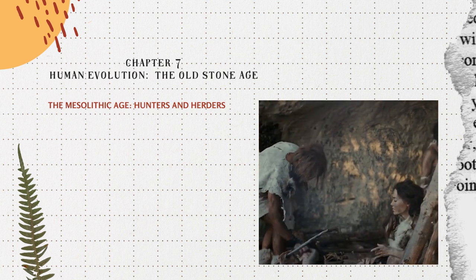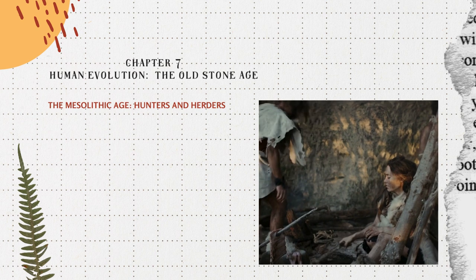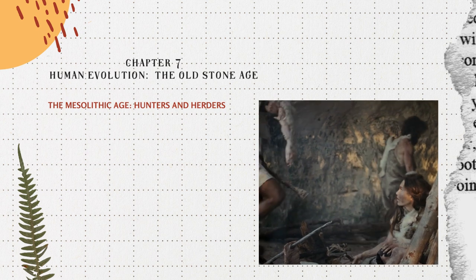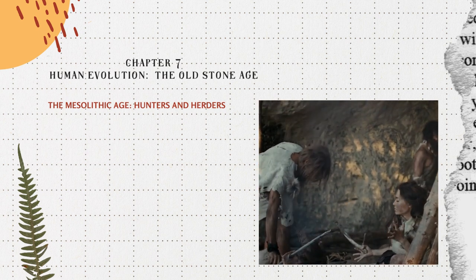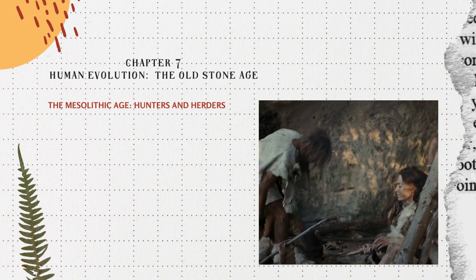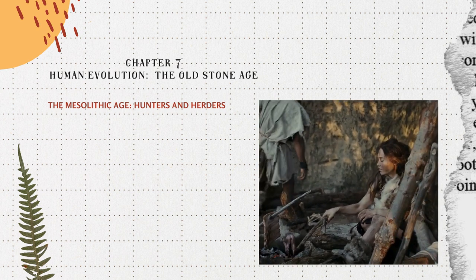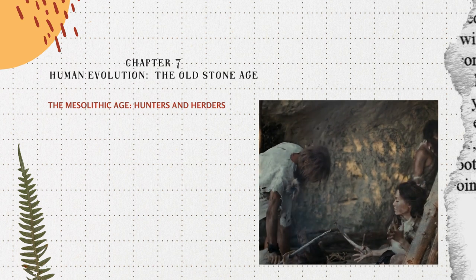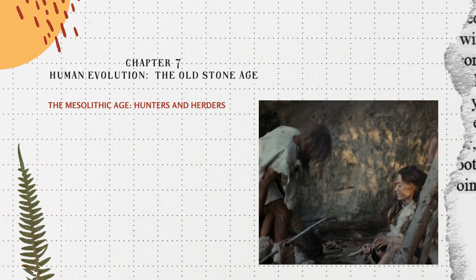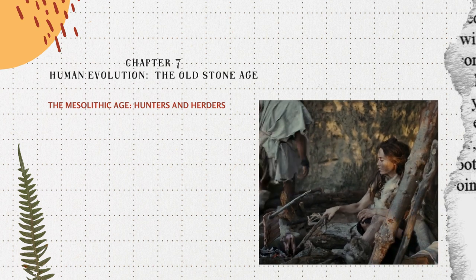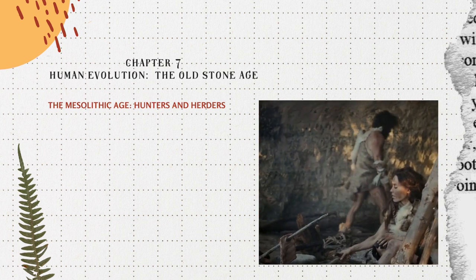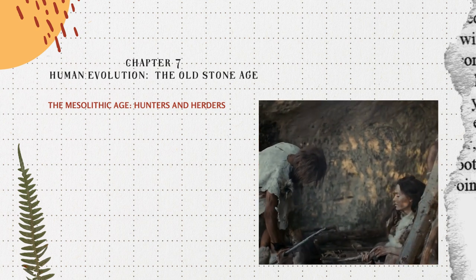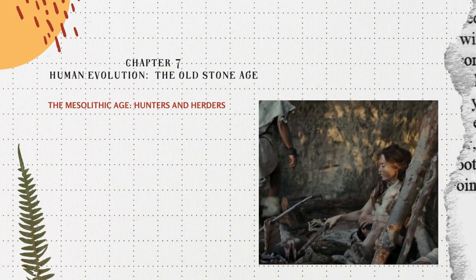The characteristic tools of the Mesolithic Age are microliths or tiny tools. Mesolithic sites abound in Rajasthan, southern UP, central and eastern India, and also south of the river Krishna. Baghor in Rajasthan is very well excavated; it had a distinctive microlithic industry and its inhabitants subsisted on hunting and pastoralism. The site remained occupied for 5,000 years from the 5th millennium BC onwards. Adamgarh in MP and Baghor in Rajasthan provide the earliest evidence for the domestication of animals in the Indian subcontinent, around 5,000 BC.